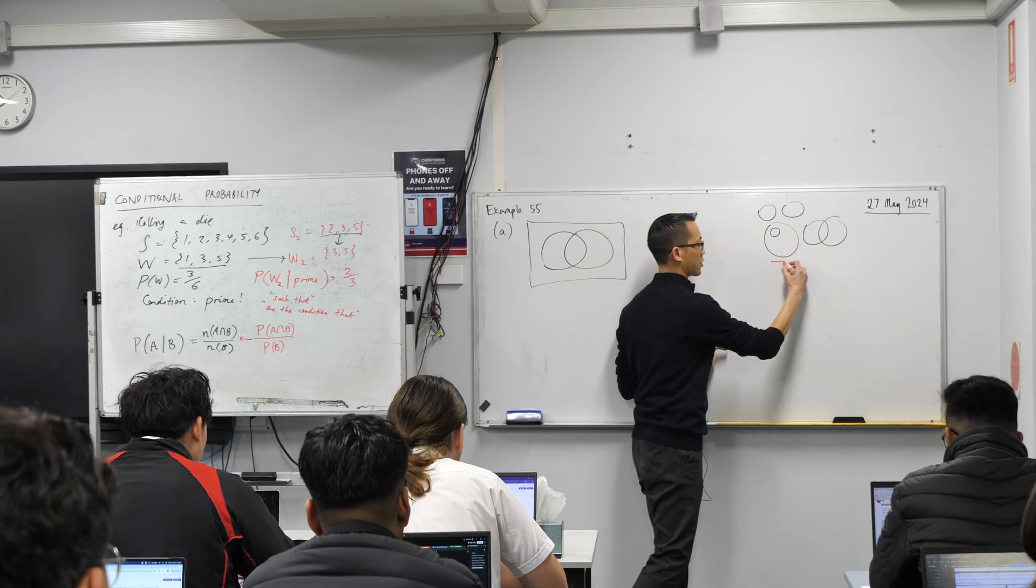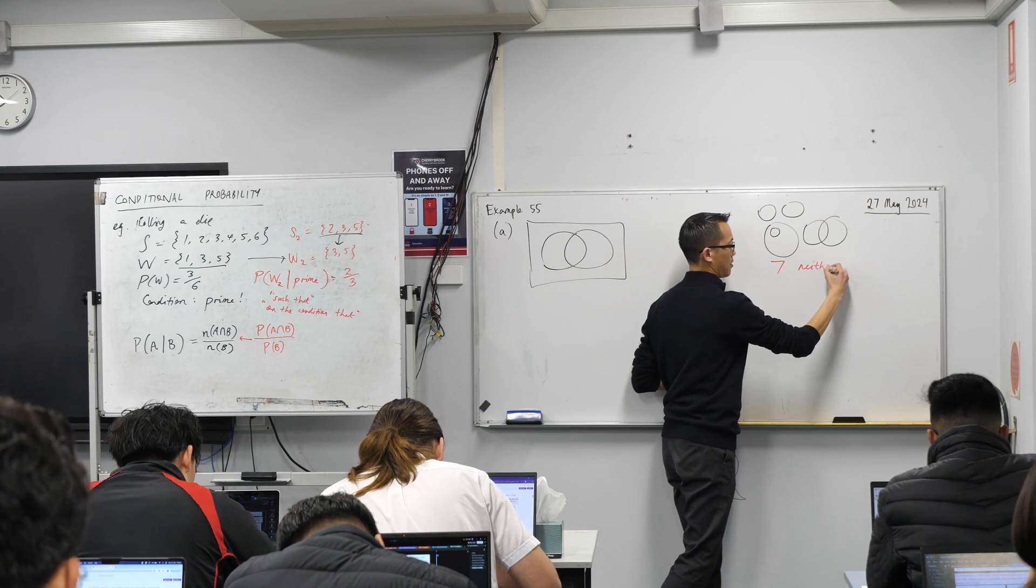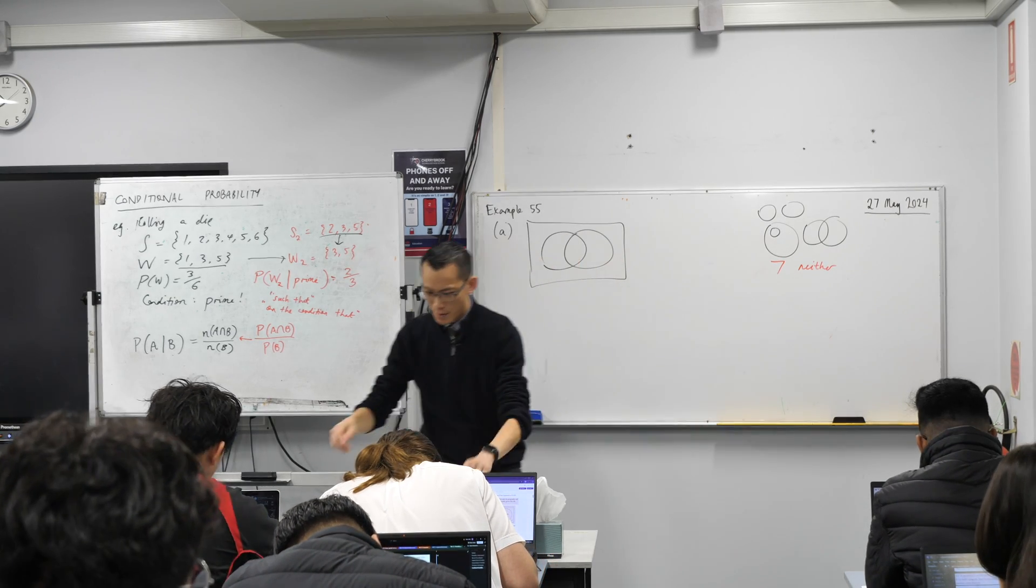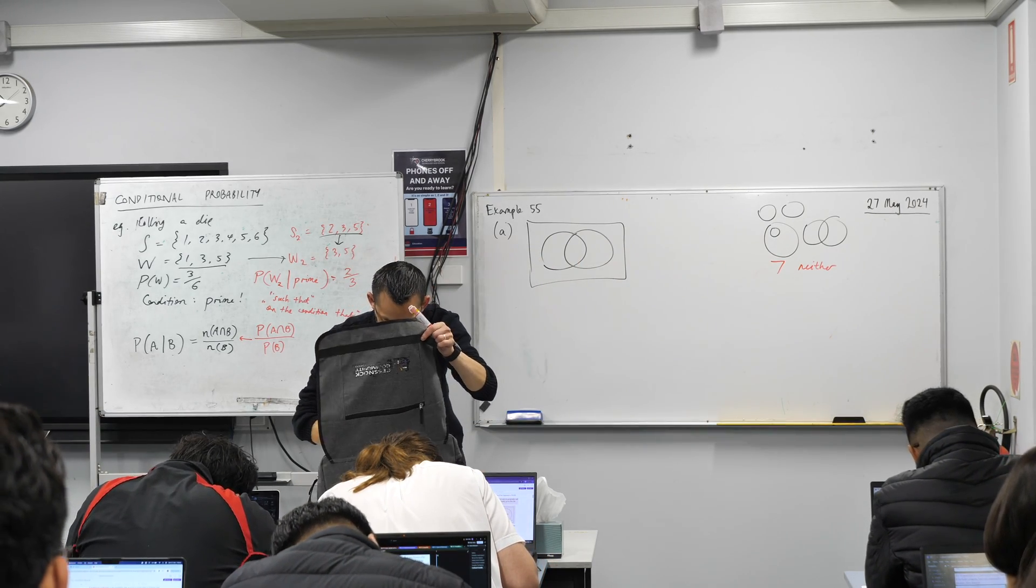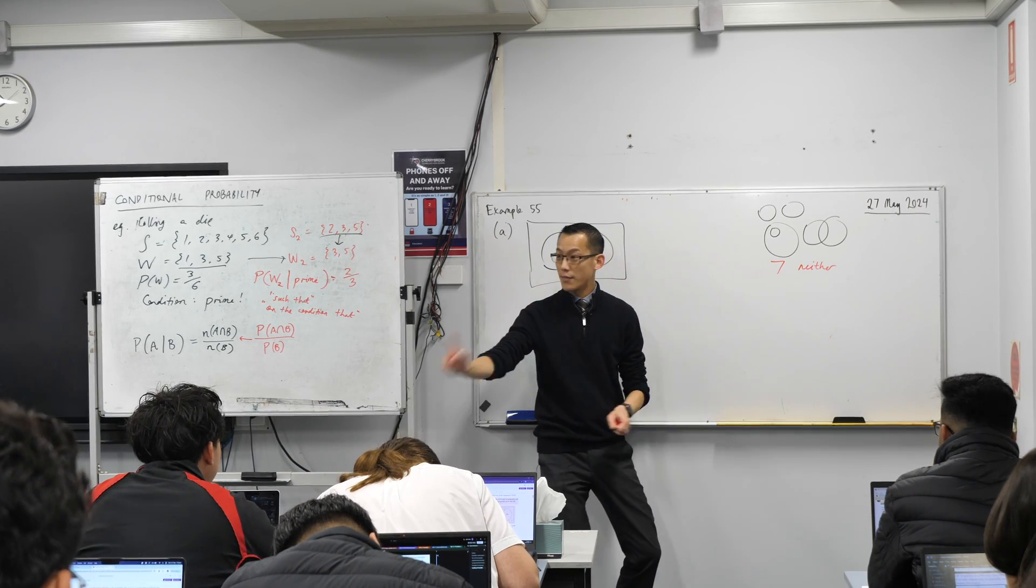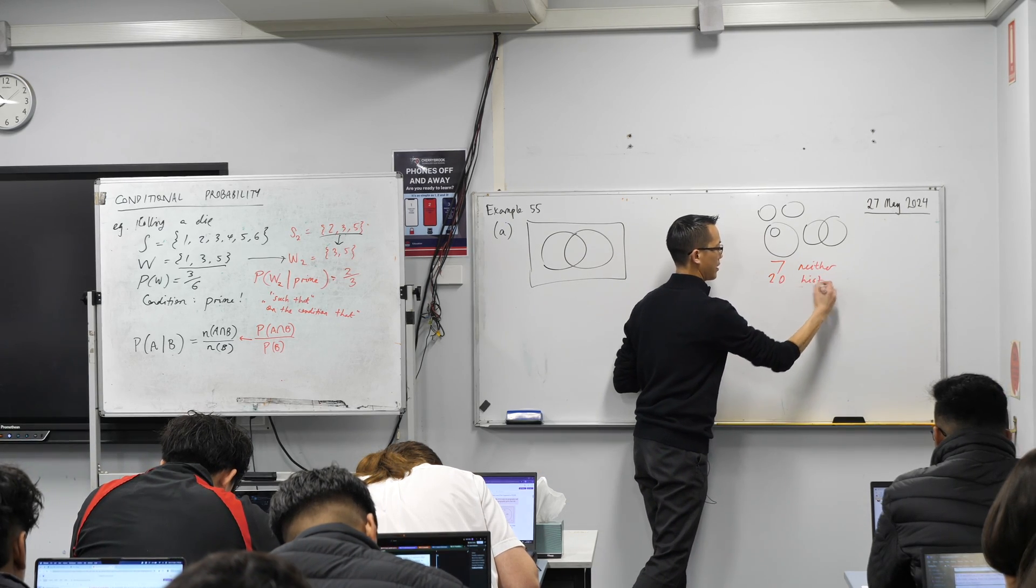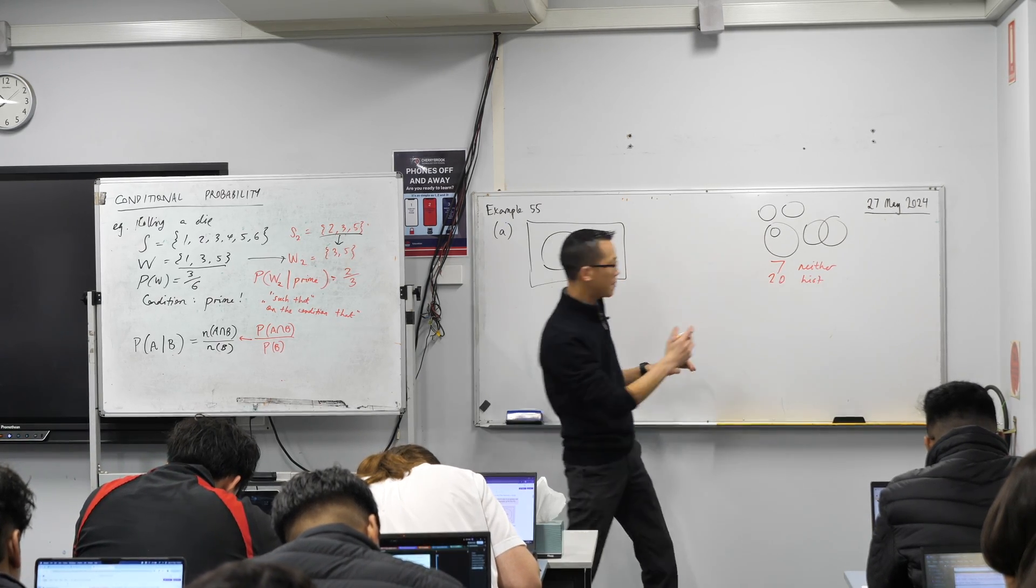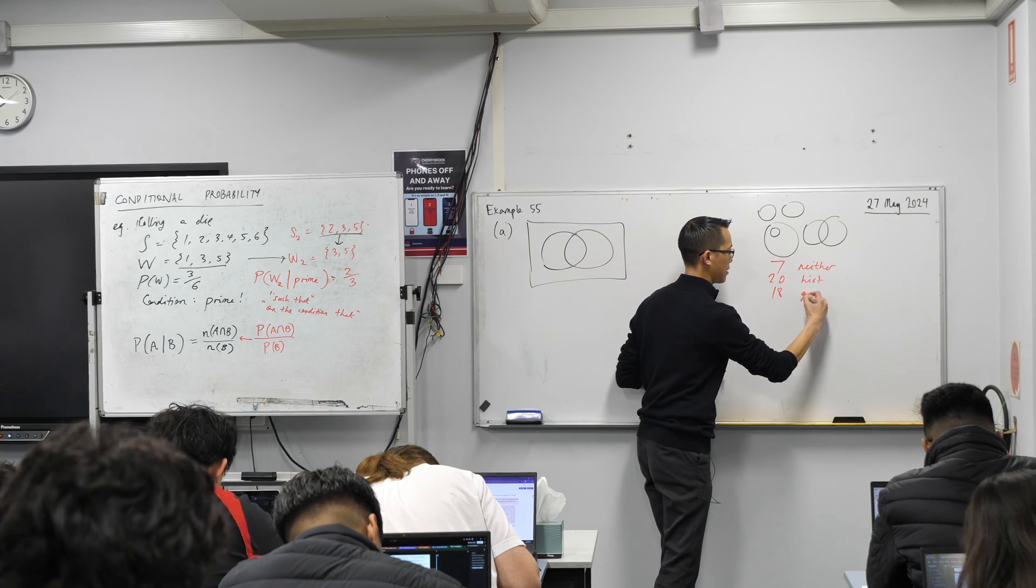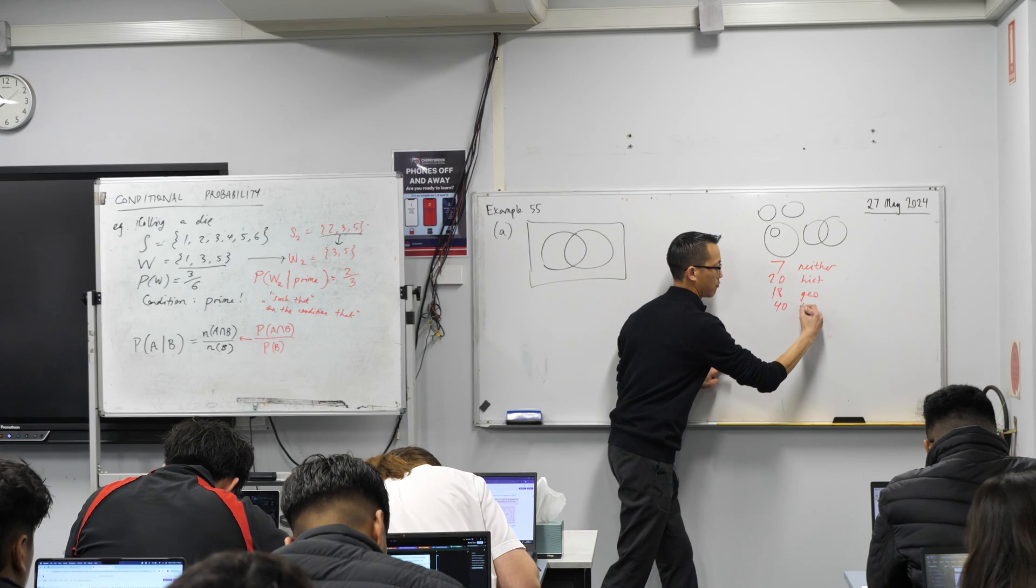Let's go ahead and draw the overlapping circles. You are right, but I'm going to ask someone else, does anyone give me a clue as to why we know they're overlapping? Here is the information. You've got seven students study neither. 20 students study history, and 18 students study geography. And then I've got 40 in total.